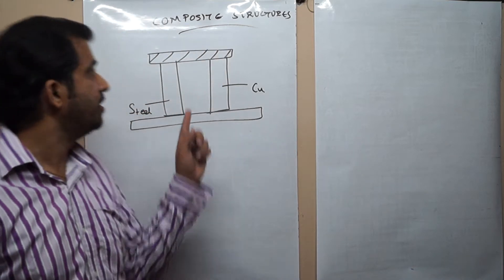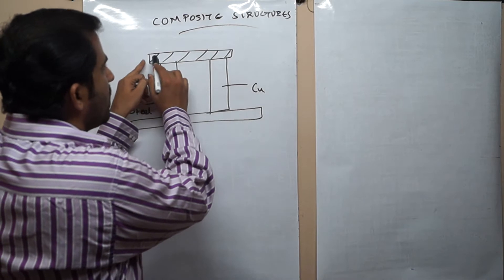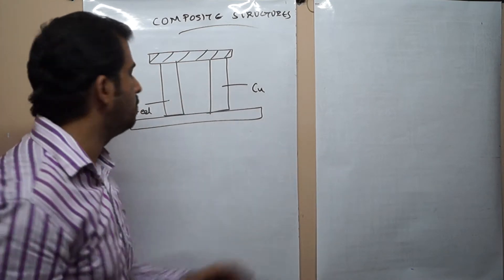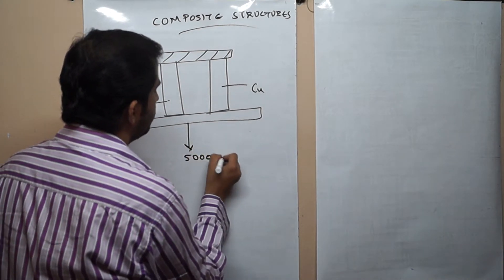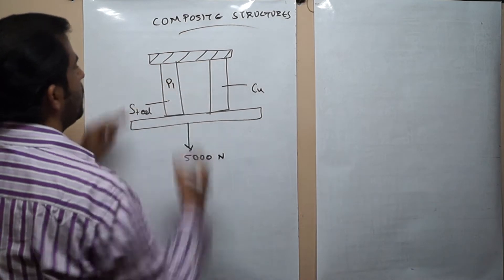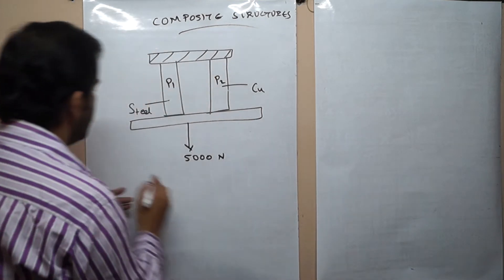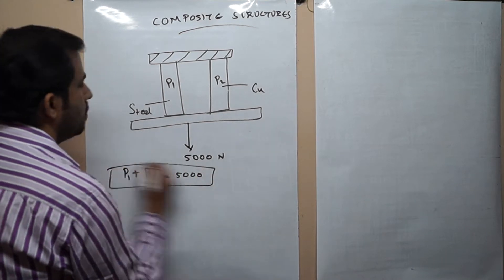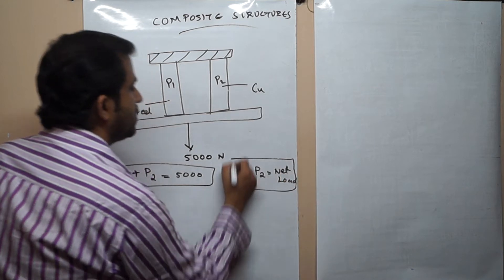Here is an example of a composite structure: a steel rod and a copper rod rigidly fixed at the top, and at the bottom there is a plate such that the steel and copper should not move. If we apply a load of 5000 Newton to this composite structure, some amount of load P1 acts on the steel and some amount P2 acts on the copper. Therefore P1 plus P2 equals 5000 Newton — this is our first inference.